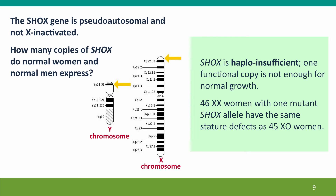Supporting the hypothesis that differences in SHOX expression are responsible for short stature is that the SHOX gene is known to be haploinsufficient. A single functional copy is not enough to give the normal phenotype — in particular, a single functional copy of SHOX is not sufficient for normal growth. That's seen in women with a normal karyotype who have two X chromosomes but one defective SHOX allele: they have the same short stature as women with a Turner syndrome karyotype.